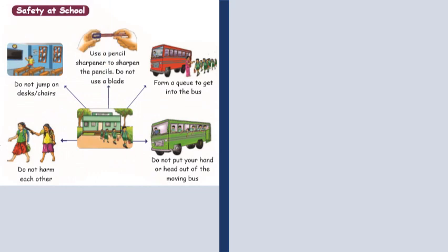Here we are going to talk about safety at school. What are the safety measures we should follow when we are in school? Do not jump on desks or chairs. Use a pencil sharpener to sharpen the pencil — do not use a blade. Form a queue to get into the bus. Do not put your hand or head out of the moving bus. Do not harm each other.